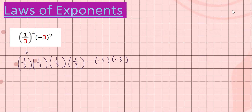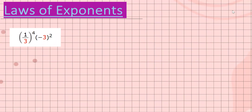What we want to do is simplify this, so I'm not going to expand it. I'm going to use laws of exponents. If you recall, laws of exponents says if you have a over b to the power n, you can distribute the power — this is a to the n over b to the n.